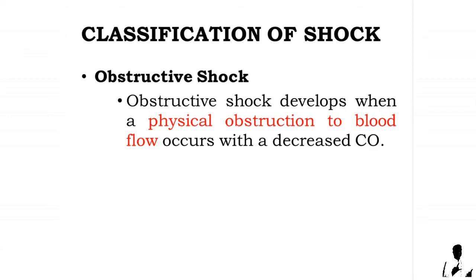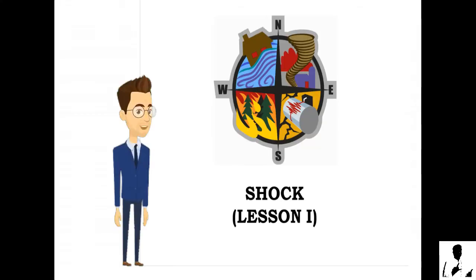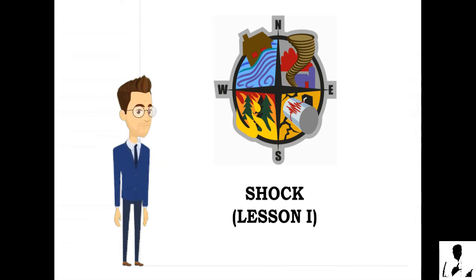Obstructive shock develops when a physical obstruction to blood flow occurs with decreased cardiac output. Table 1 shows the types of shock, their causes, and examples.